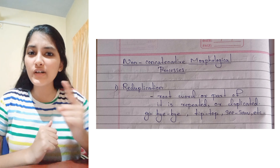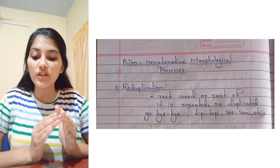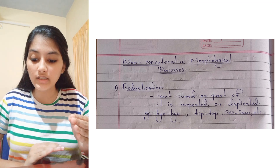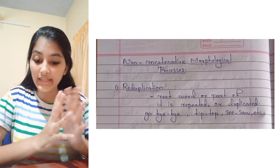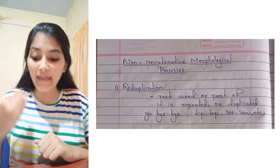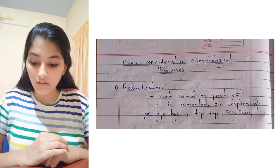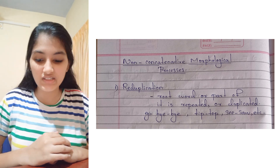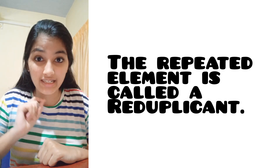Non-concatenative morphological processes: the first is reduplication. It is a morphological process in which the root word or a part of it is repeated or duplicated, sometimes with a slight change, to form a new word. Examples: bye-bye, tip-top, see-saw, etc. The repeated element is called a reduplicant.